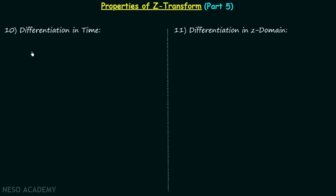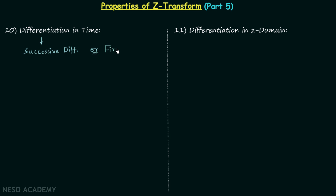In the fifth part we are going to have a discussion on differentiation in time and differentiation in Z domain properties of Z transform. We will begin with the differentiation in time property. In the case of discrete time signals, differentiation is nothing but successive difference, so we call this the successive difference property, or the first difference property.